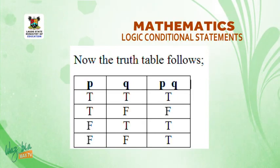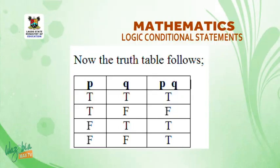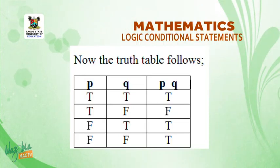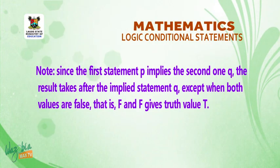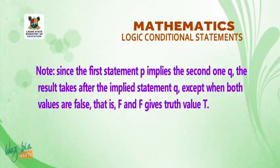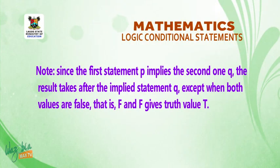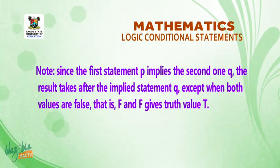Now for p implies q: T and T gives T; T and F gives F; F and T gives T; F and F gives T. Note: since the first statement p implies the second one q, the result T takes after the implied statement q, except when both values are false — F and F gives truth value T.